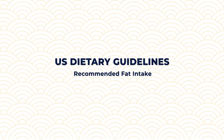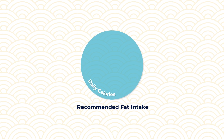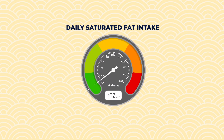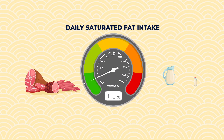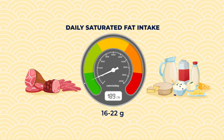But how much fat do you actually need in your diet? According to the 2015-2020 Dietary Guidelines for Americans, 25% to 30% of your daily calories should come from fats, and saturated fat intake specifically should be less than 10% of daily calories. For example, in a daily 2000 calorie diet, 140 to 200 calories or 16 to 22 grams must come from saturated fats.